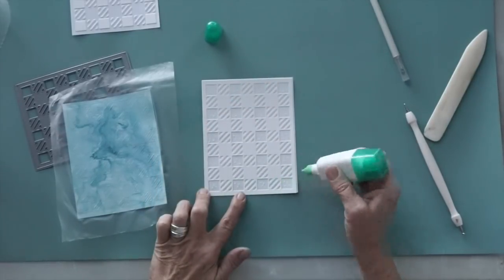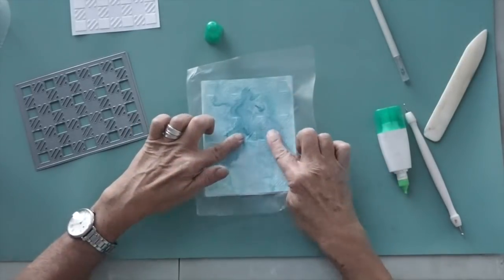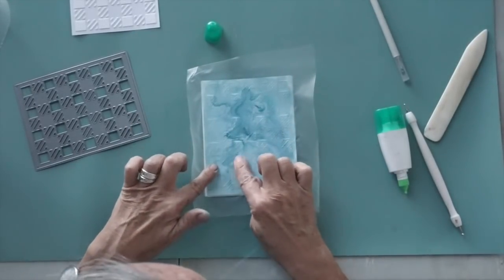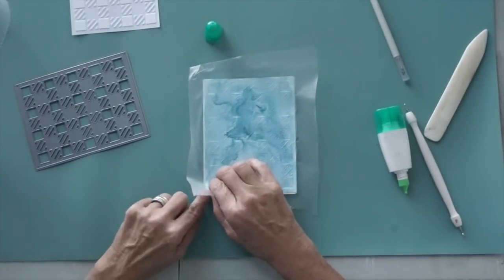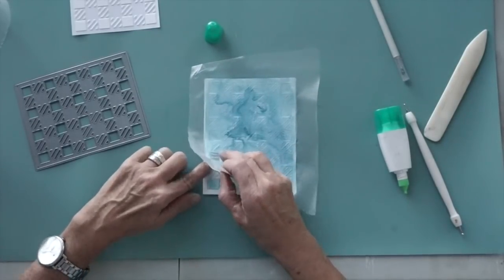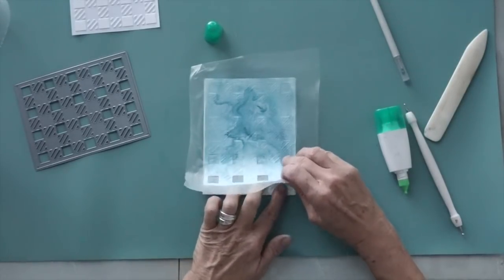So the next step you can see now is I've filled all the little squares with adhesive and I can lay my painted piece down. It's all held intact by that press and seal and I can just feel and press all those cut pieces into their little holes on the white background.